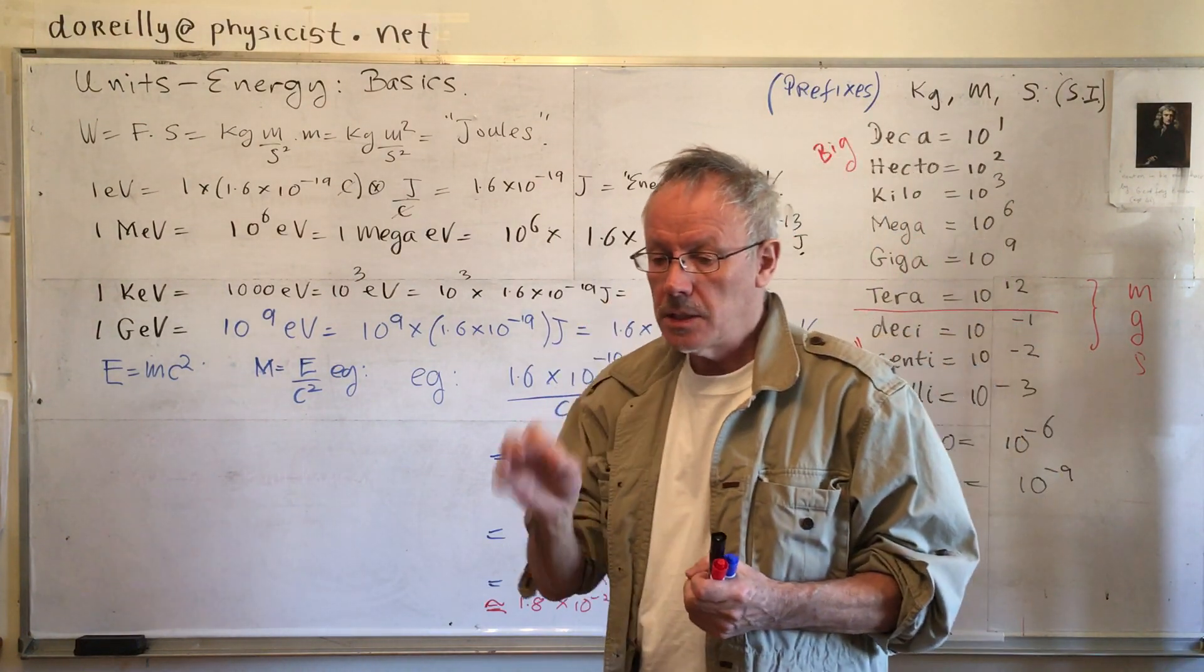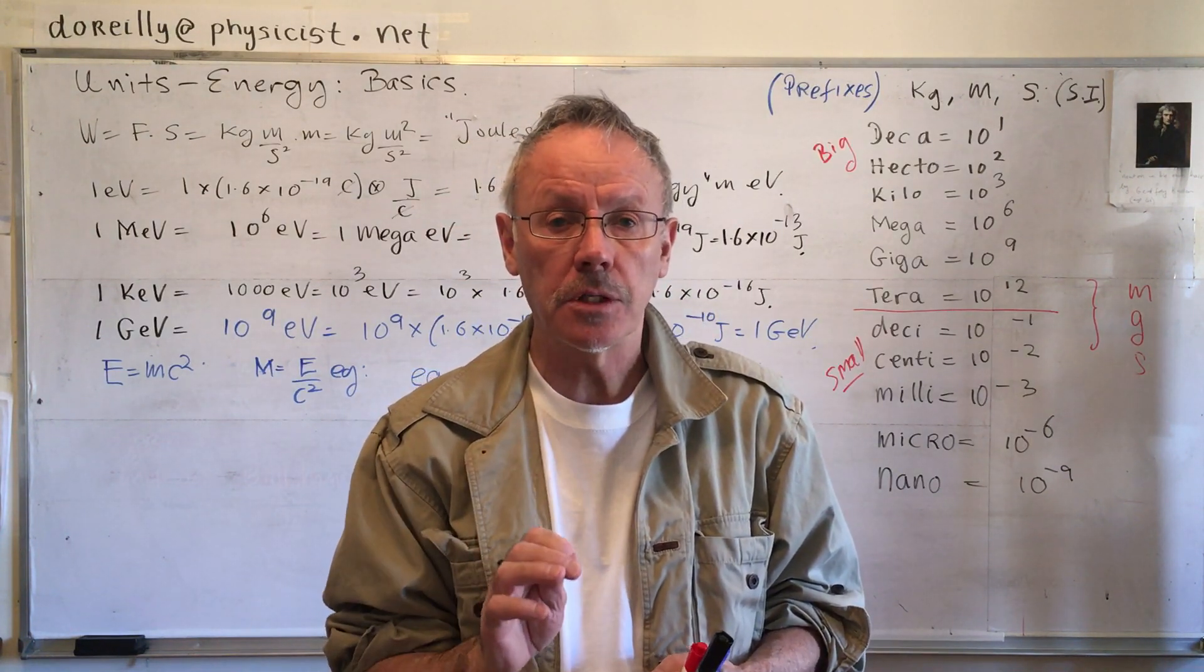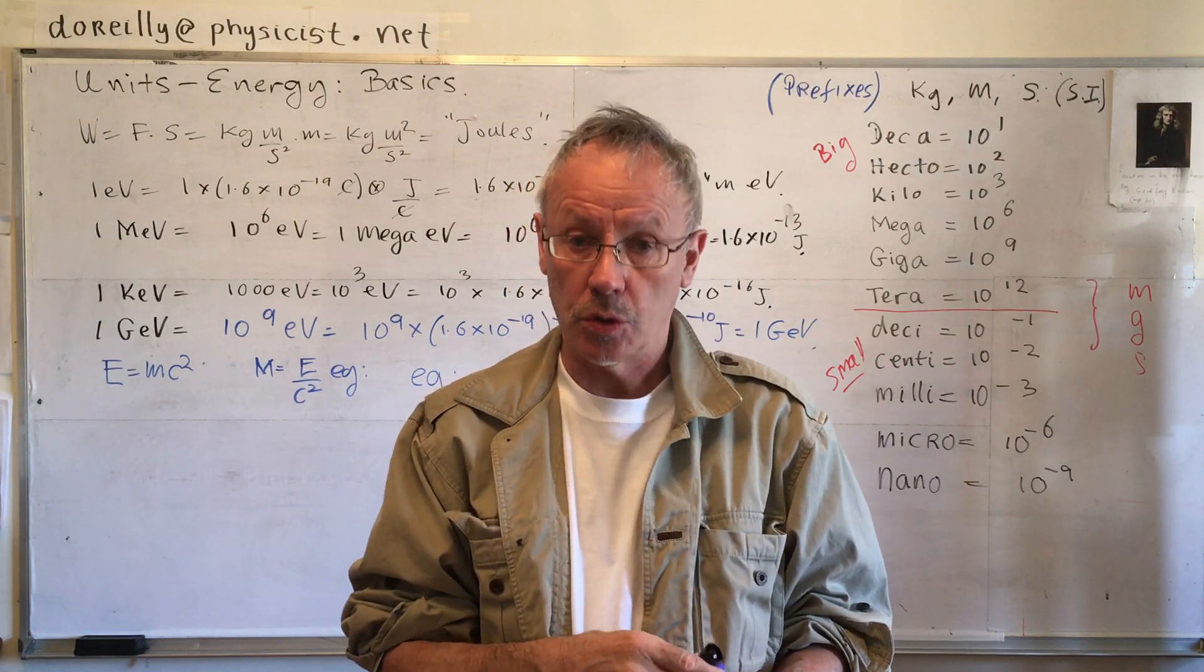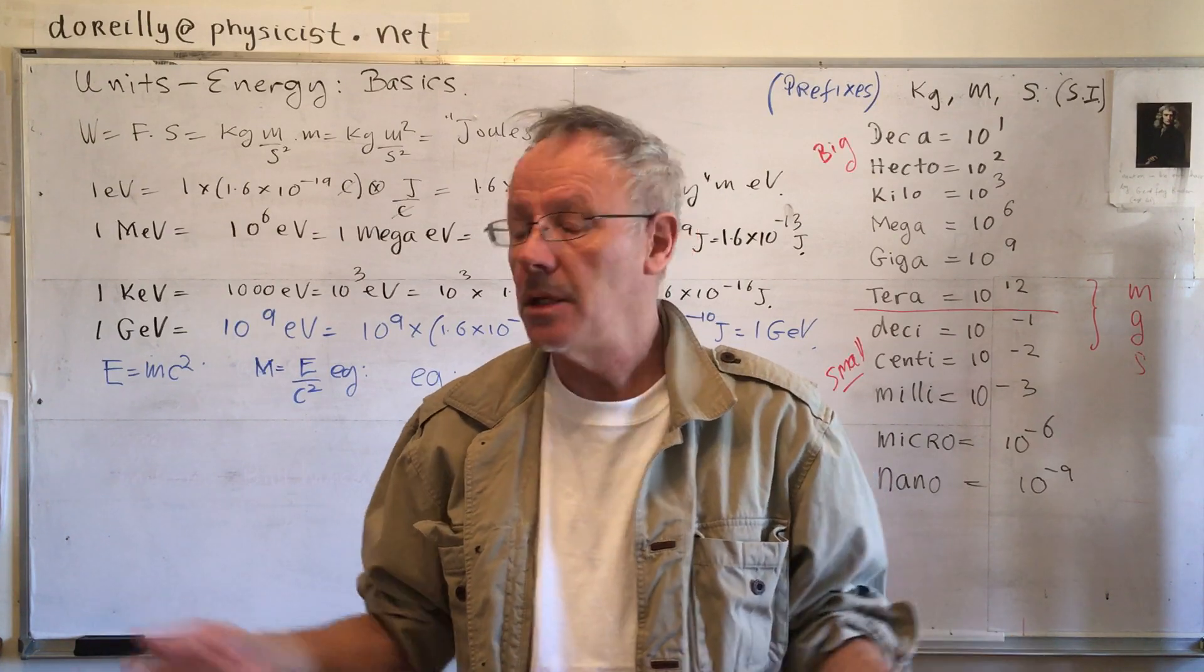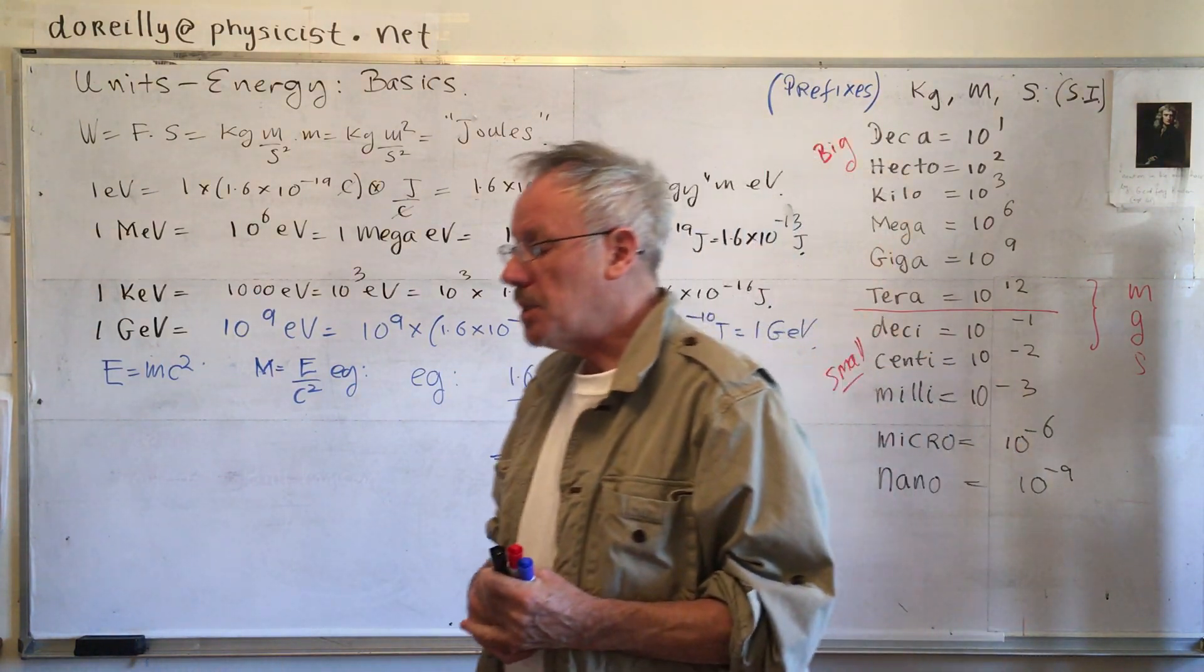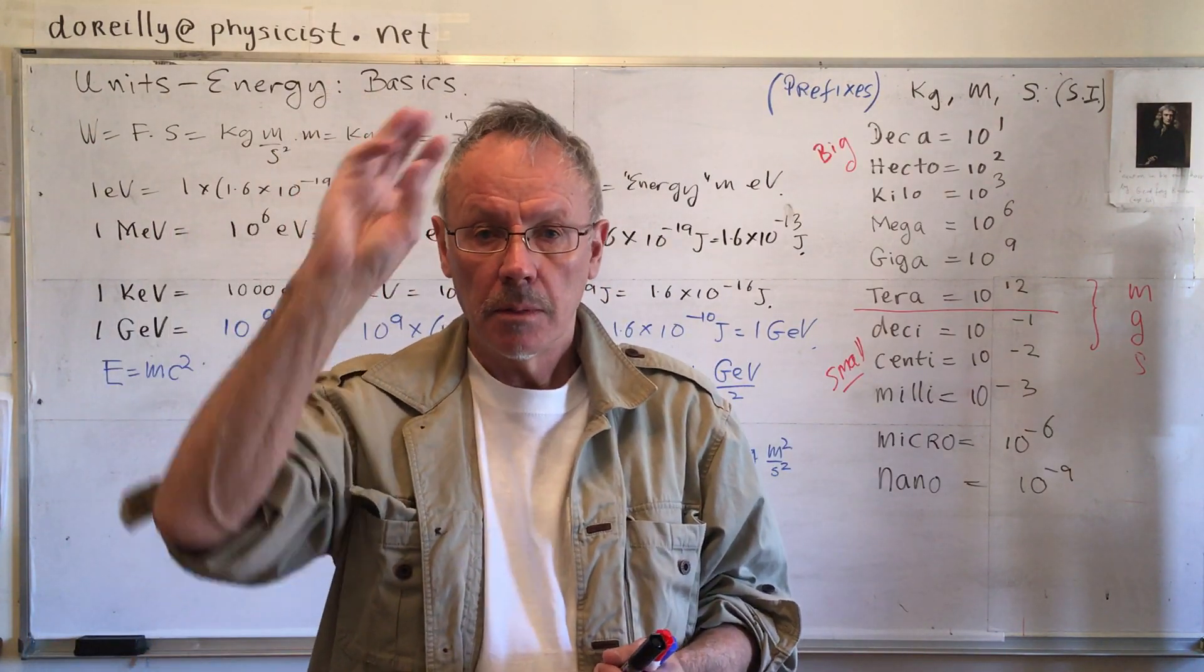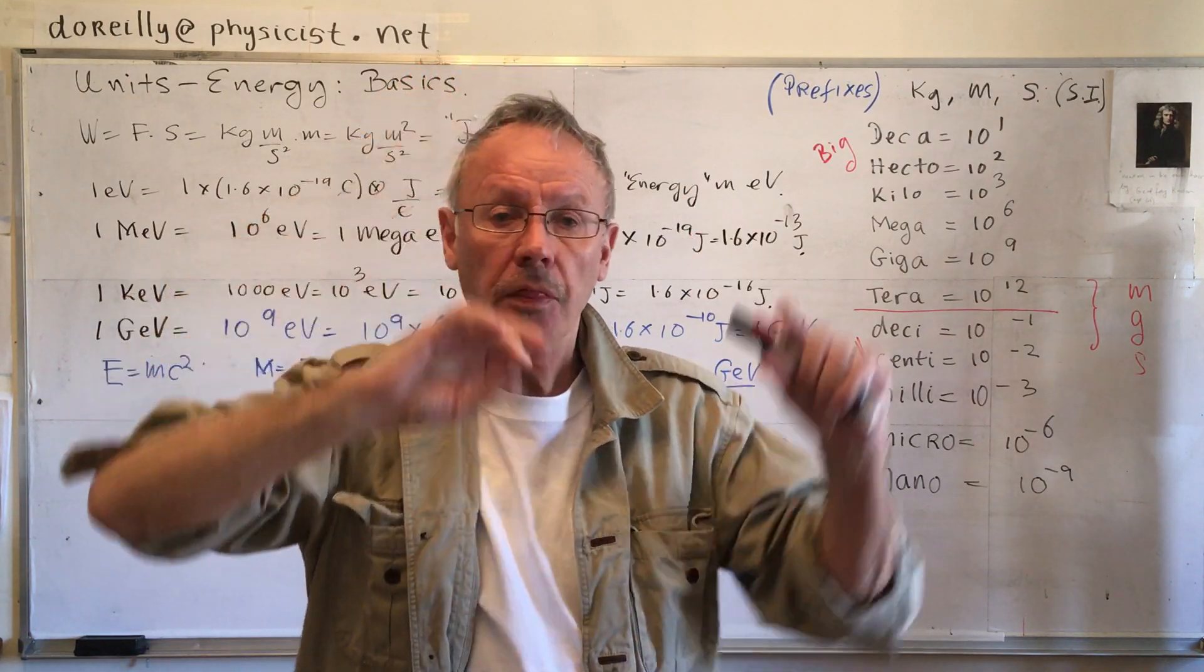And then you get indivisible units. 1.6 by 10 to the power of minus 19 coulombs. 3.2 by 10 to the power of minus 19 coulombs. But they're all multiples of this unit of charge. So therefore, it's called the fundamental unit of charge. It can also be called the charge on an electron. The fundamental unit of charge defines what's called the electron volt. Now, what is a volt? A volt is the energy gained by one coulomb of charge when accelerated through a potential difference of one joule. In other words, charge picks up one joule for every coulomb. A joule per coulomb is a volt.